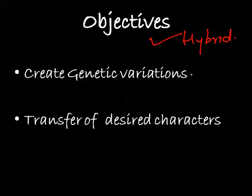Now, what are the main objectives of hybridization or creating hybrids? One main objective is creating genetic variation — to assemble certain required characters in a progeny that would help in increasing yield or obtaining some desired character in the next generation.